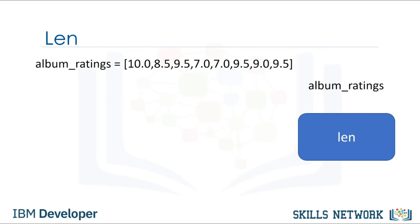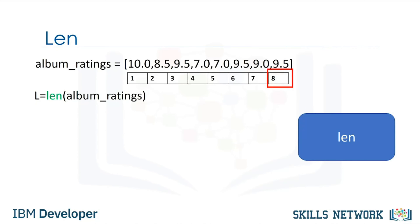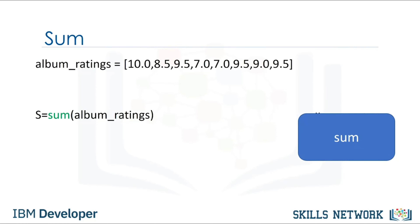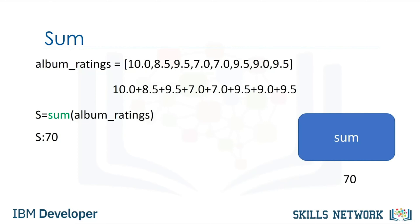The function sum takes in an iterable like a tuple or list and returns the total of all the elements. We pass the list into the sum function, assign the result to the variable s, and the function returns the total — in this case the value is 70. There are two ways to sort a list. The first is using the function sorted; we can also use the list method sort. Methods are similar to functions.